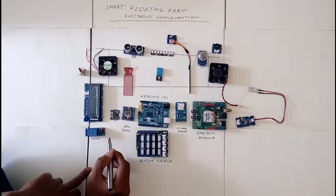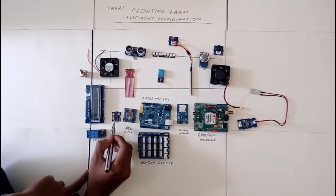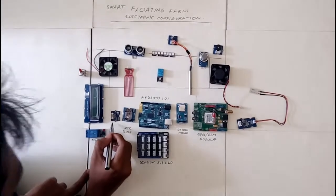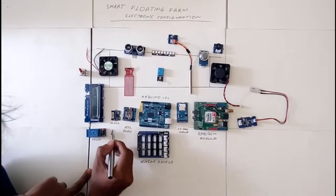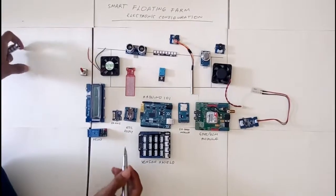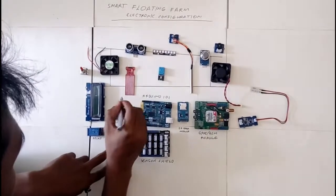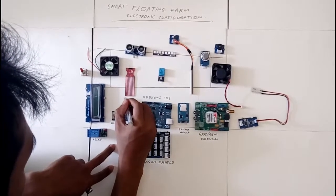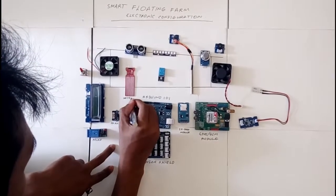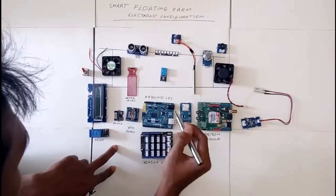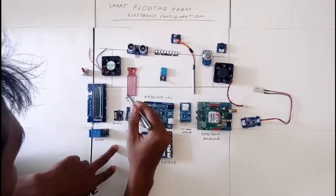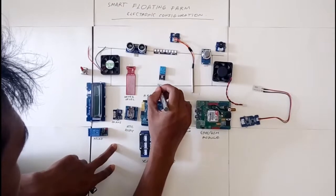Here we have a 3D axis accelerometer to know the motion in three axes. We also have a water level sensor to know the height of the water inside.